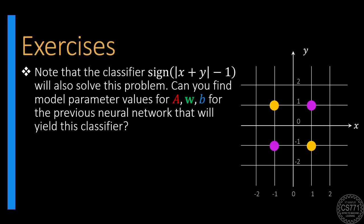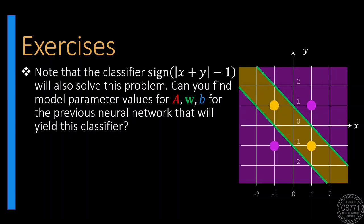Time for another fun exercise. Notice that a classifier that checks whether the absolute value of the sum of the x and y coordinates of a point is greater than 1 will also perfectly solve this problem, although it will draw the strip in a different way with a different decision boundary. Find out values of the model parameters A, W, and B for which the neural network will yield this particular classifier.